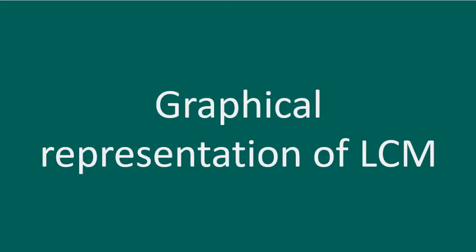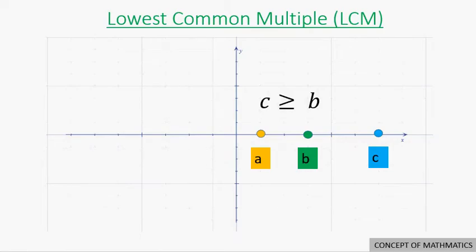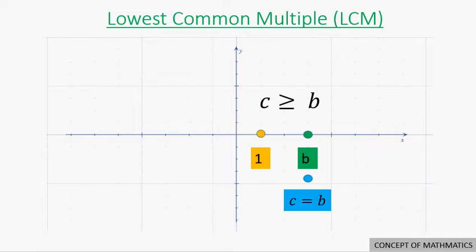Now we will dive into some deeper concepts of LCM using a graphical representation. Suppose the LCM of two positive numbers A and B is C. Then it is evident that C is greater than or equal to the larger number B, since it is a common multiple of both numbers. The equality holds only if either A equals 1 or B equals 1.